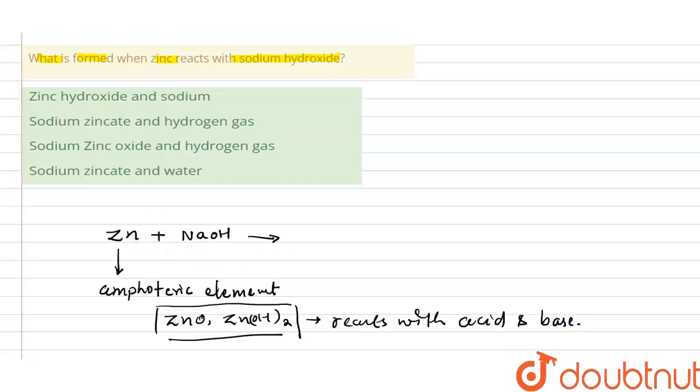So now if it is reacting with base, one general statement: if an amphoteric element reacting with acid or base, that will form H2 gas. That you have to remember.